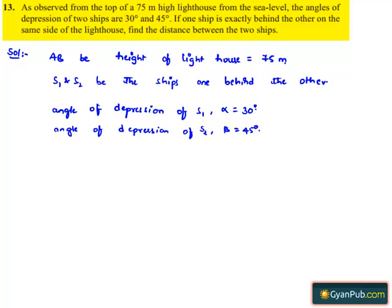Now, let us represent the above information in the form of a figure. Here, AB is the lighthouse and S1, S2 are the two ships, one behind the other.